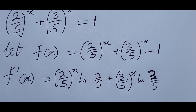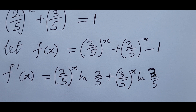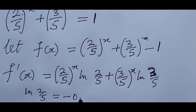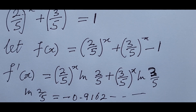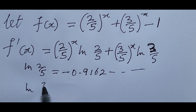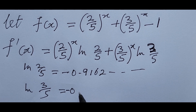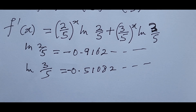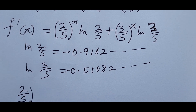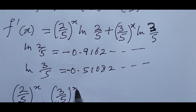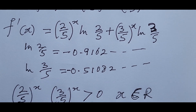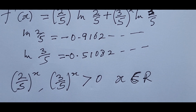From here, we discover that ln(2/5) and ln(3/5) are both negative. For example, ln(2/5) ≈ −0.9162 and ln(3/5) ≈ −0.5108. Also, (2/5)^x and (3/5)^x are both greater than 0 for every real value of x.